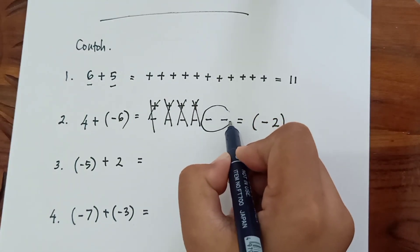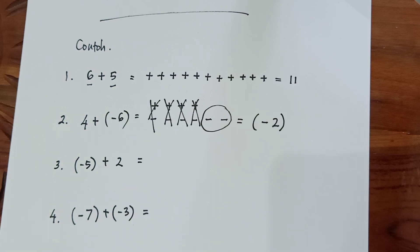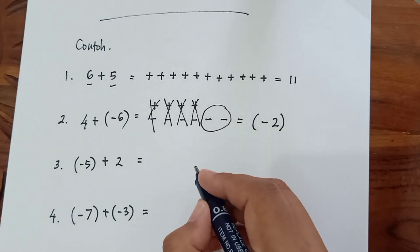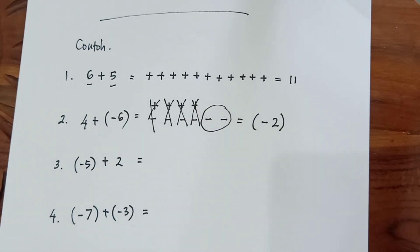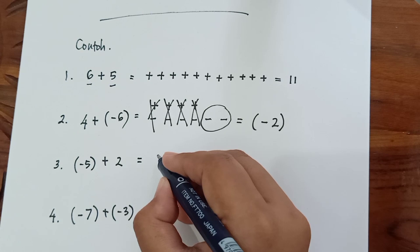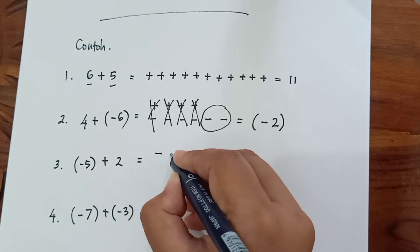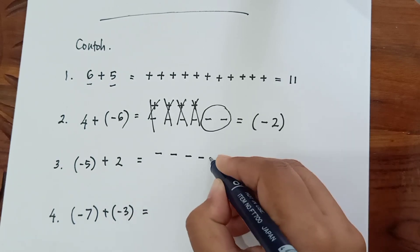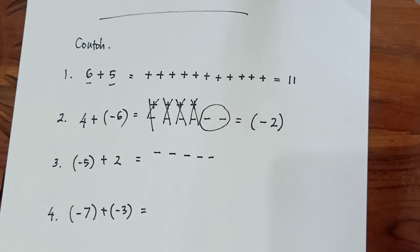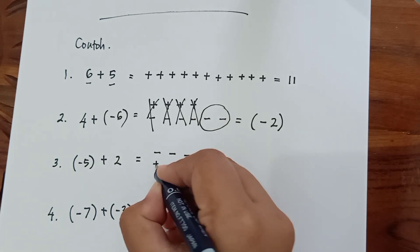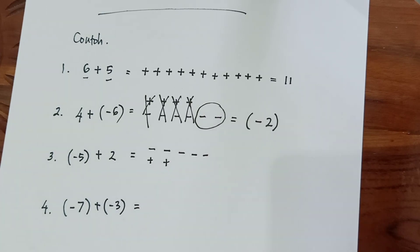Kita lanjutkan contoh selanjutnya, nomor 3. Negatif 5 tambah 2. Kita buat dulu tanda negatif sebanyak 5 kali: 1, 2, 3, 4, 5. Ditambah 2. Sama seperti tadi, pasangkan dengan tanda negatif di atasnya. Tambah, tambah.